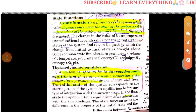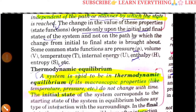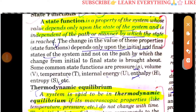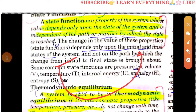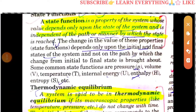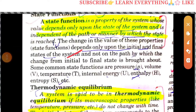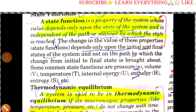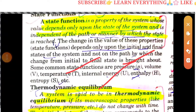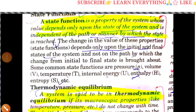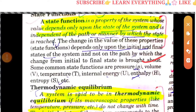A state function is a property of a system whose value depends upon the state of the system and is independent of the path — it does not depend on how the state was reached. The state function only depends on the state of the system. The four important state variables are volume, pressure, temperature, and internal energy.